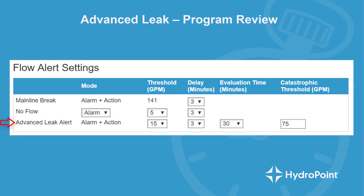So if you normally run your quick couplers for 20 minutes, you would set your evaluation time to something greater than that, say 30 minutes. And then, if someone plugged in the quick couplers and forgot about them, at 30 minutes the advanced leak alert would be raised and the master valve would close.